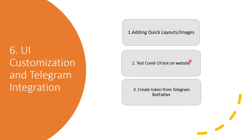Second, we will check our COVID-19 chatbot on the Dialogflow website. If you want to integrate this chatbot on a website or web application, Dialogflow gives us an iframe tag for that — you just need to copy-paste that iframe tag into your HTML and you are good to go. Third, we will be creating a token from Telegram BotFather and then integrate that token to Dialogflow so that Dialogflow and Telegram get connected together.